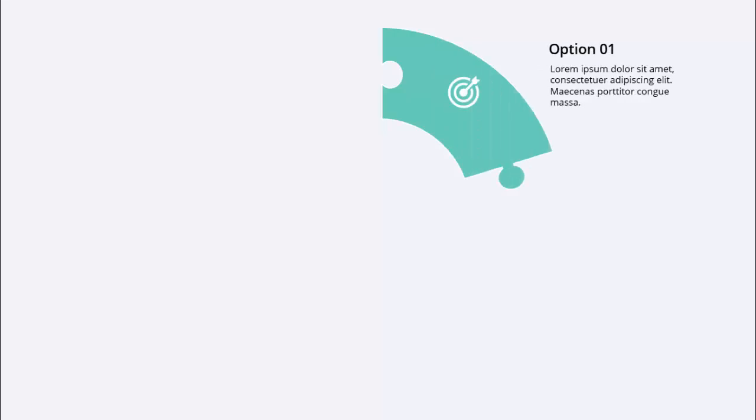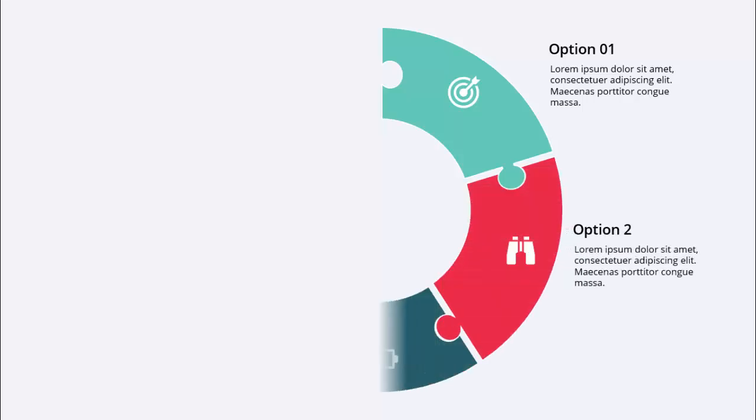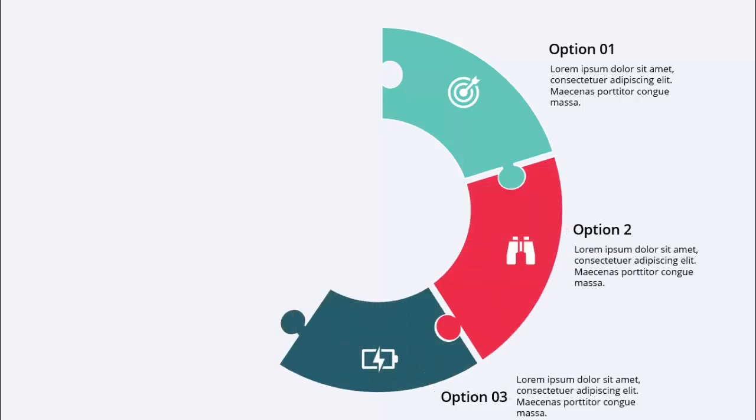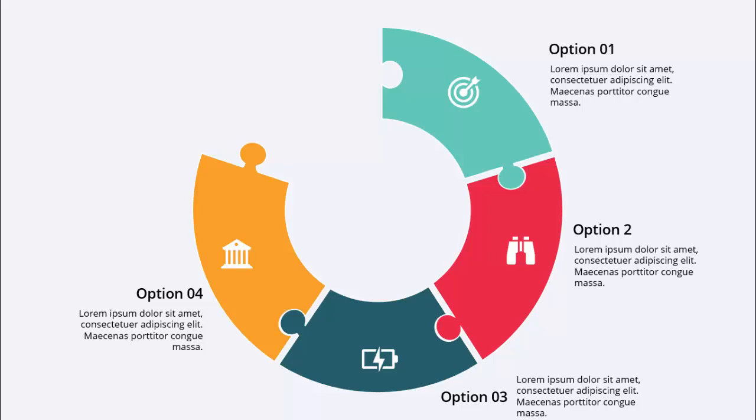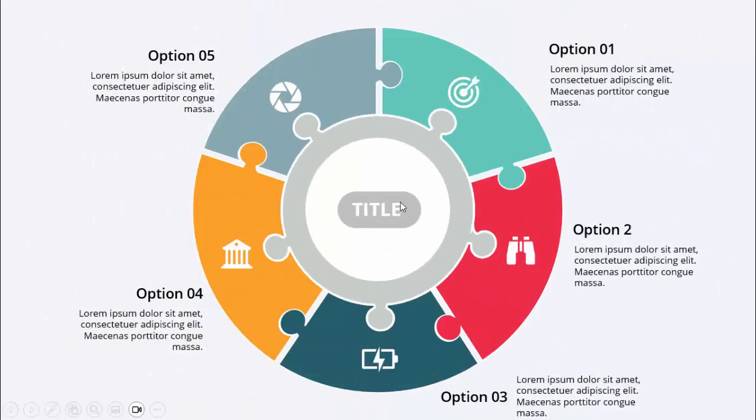In today's tutorial I'm going to show you how to create a five options infographic slide in PowerPoint. This is how the slide works: when I click it will show me option one. It looks kind of a puzzle design — when I click it will show option two, option three, option four, and option five. In the middle you can add the title.